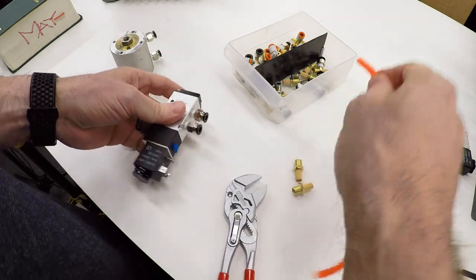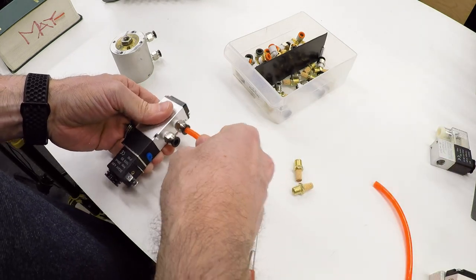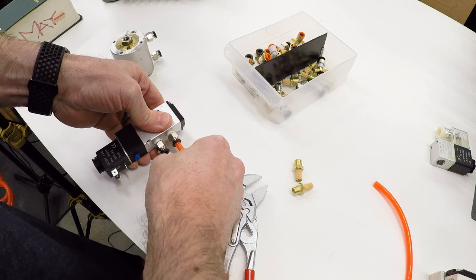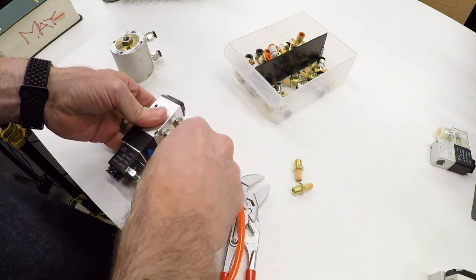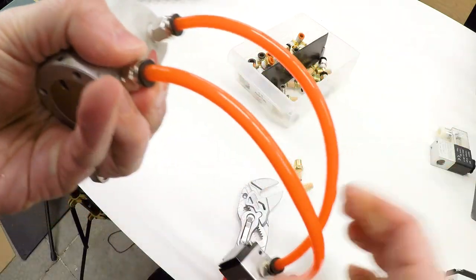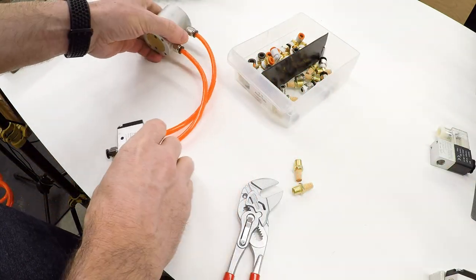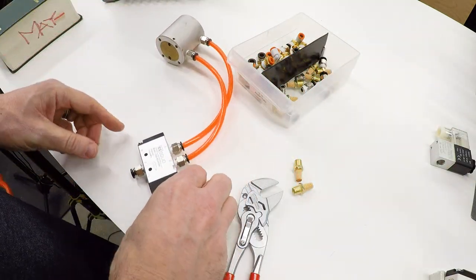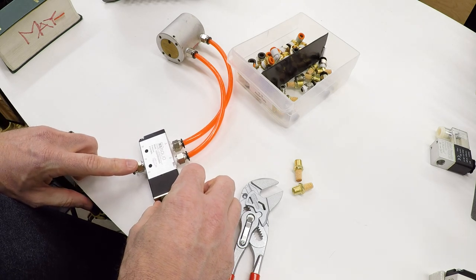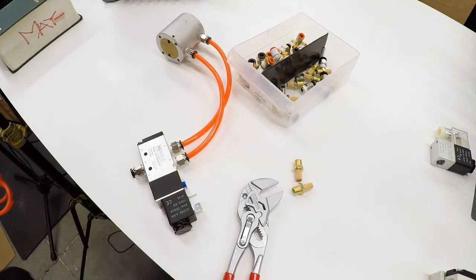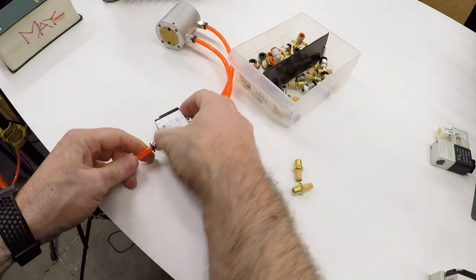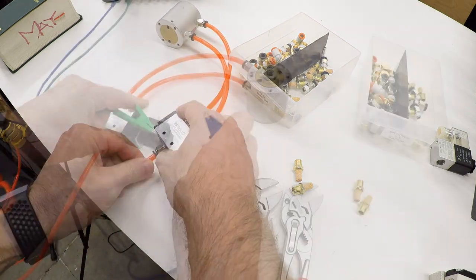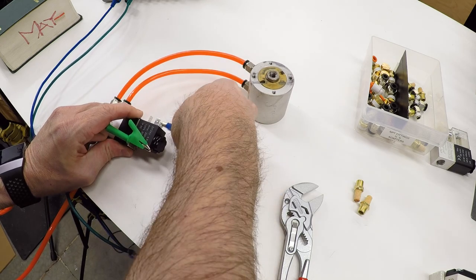Then we'll connect tubes to the outlets here. Push those in far enough that they engage the O-ring and the spring. I think we've got that set and now we just need to get some air pressure on the inlet port and clip on the electrical leads.